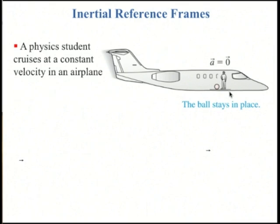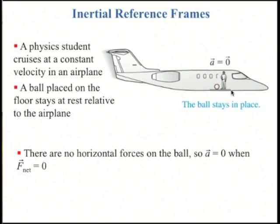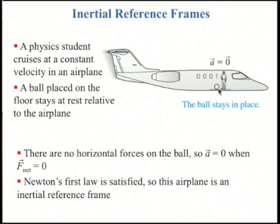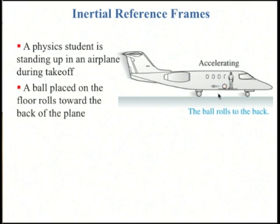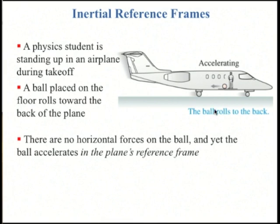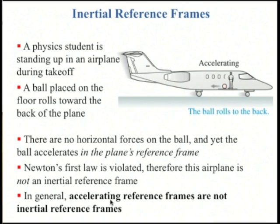A physics student cruising at constant velocity in an airplane places a tennis ball on the floor and it stays at rest — no horizontal forces, zero acceleration. Newton's first law is satisfied, so the airplane is an inertial reference frame. But on the runway with the pilot accelerating, the ball placed on the floor rolls towards the back of the airplane with no horizontal forces acting on it — Newton's first law is violated, so the accelerating airplane is not an inertial reference frame. In general, any reference frame that is accelerating is not an inertial reference frame.